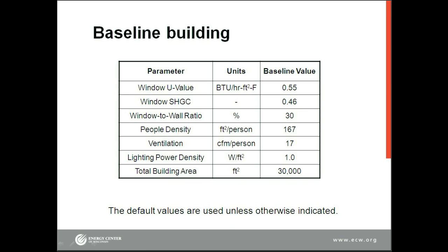You can use the sliders to input these values. Specifically, the window U-value needs to go to 0.55, so you can just click on the slider and drag it to that value. Similarly, the values for solar heat gain coefficient, window-to-wall ratio, people density, ventilation rate, lighting power density, and overall building square footage need to be updated. You can also enter these values directly into the cells that are controlled by the sliders. This is particularly useful if your values are outside of the range of the sliders. However, be careful — doing this will potentially result in a loss of functionality of the sliders, as well as the reset to defaults button. I would recommend always starting from the same saved template of the back-of-the-envelope calculator, and never from a version that you've already changed.